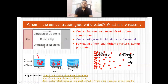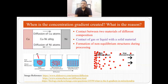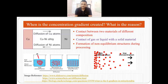When is this concentration gradient created? What is the reason behind this concentration gradient? This concentration gradient or concentration difference can be seen when we connect two materials of different composition, when a gas or liquid is in contact with a solid material, or there are formations of non-equilibrium structures during processing. These are three major reasons why the concentration gradient can be created, though there can be other reasons too.